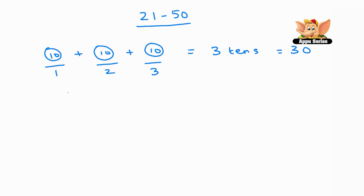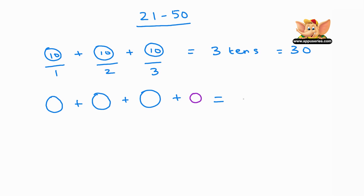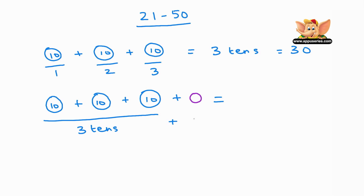Let's continue from 30 grapes. There's one circle plus another circle plus another circle plus one grape. We know that this is one 10, two 10s, three 10s, plus one 1. Three 10s plus one 1 equals 31.